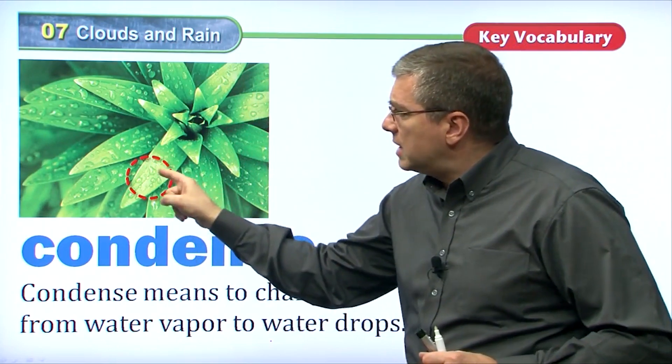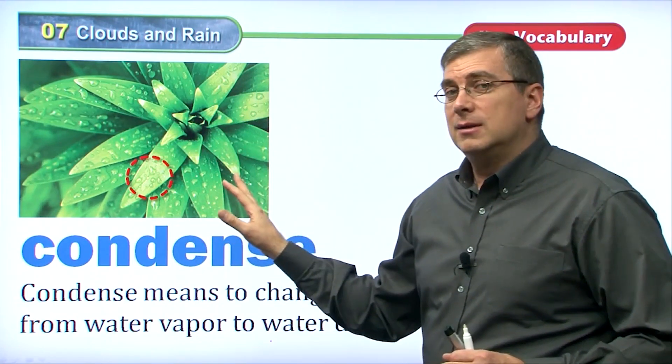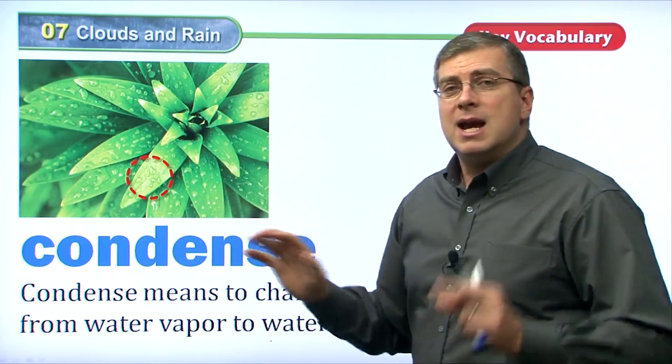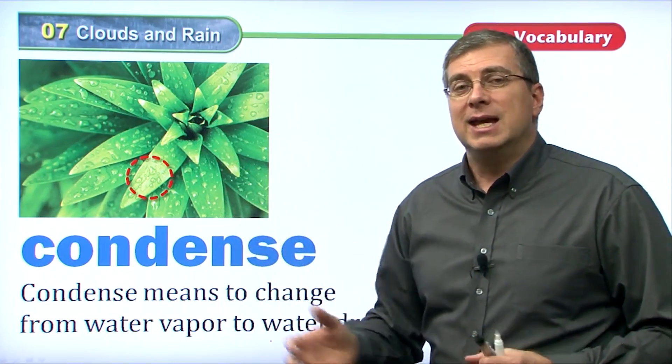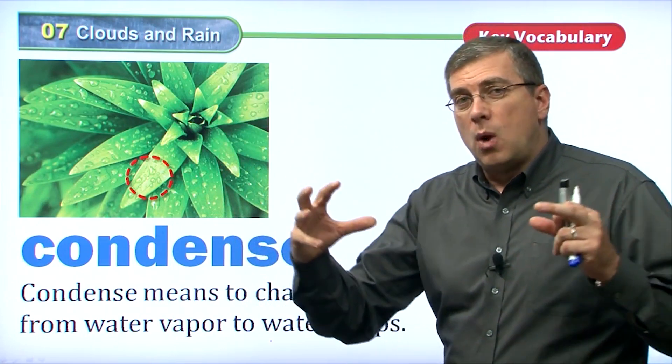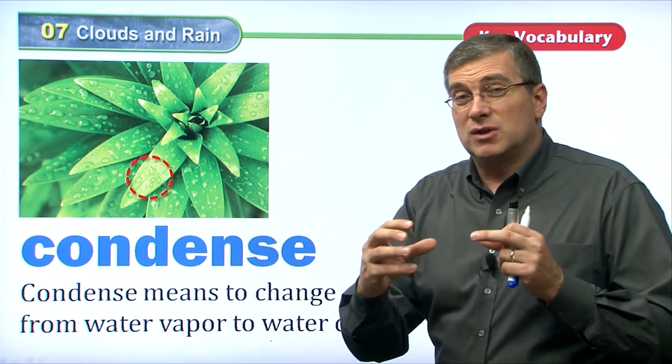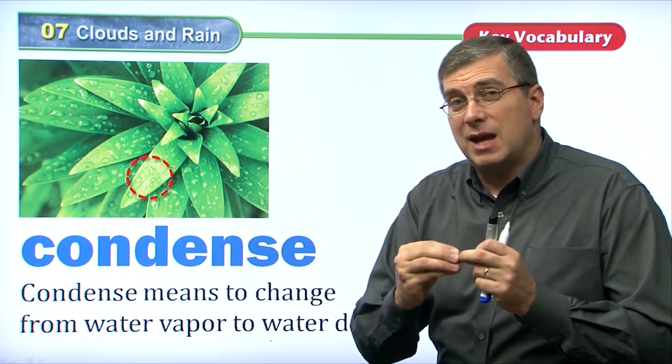If you see these drops on the leaf, it doesn't have to rain for this to happen. Imagine in the cool morning, before it becomes day. It's very cold at night. The water, because of the temperature is very cold, the water drops in the air will get together.